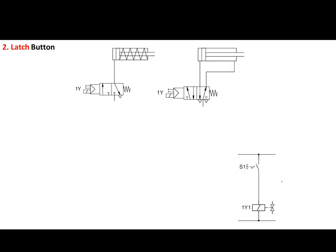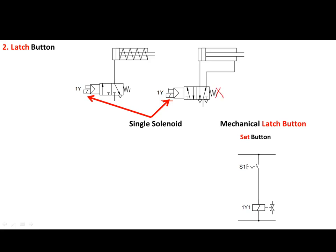The second method is the mechanical latch button. In this case, we only implement a single solenoid — there is no second solenoid — and that is what makes this method different from the previous example. The electrical circuit is quite simple: we only use a single button to energize the single solenoid.